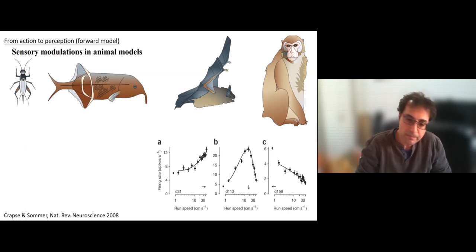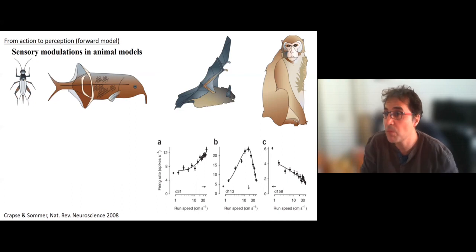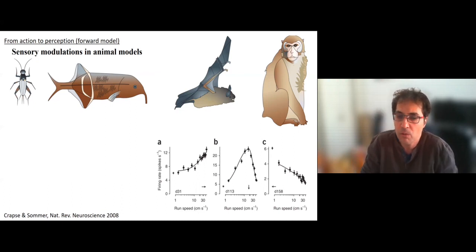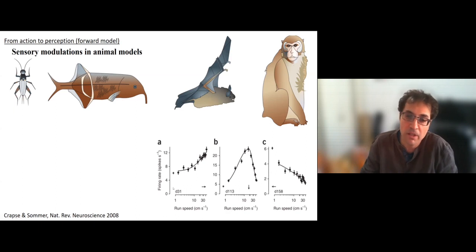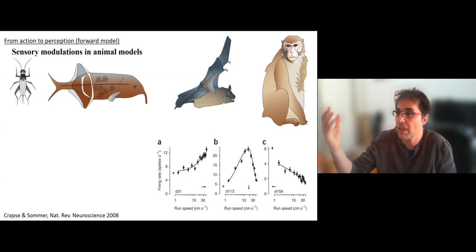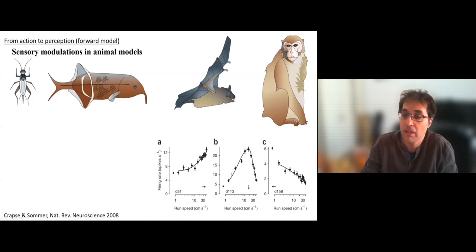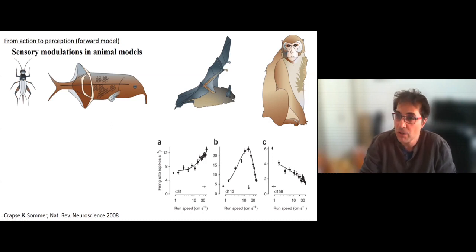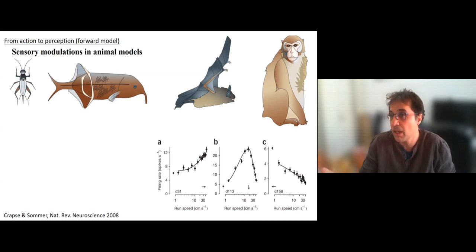Another example, this case in mice, shows the firing rates of neurons in the primary visual cortex while they were running on a treadmill in complete darkness — no visual input. One neuron increases its firing rate as a function of running speed, another decreases its firing rate, and a third has a preferred running speed. This is a nice example showing how actions can modulate neural activity in sensory regions, even in the lack of a sensory stimulus.